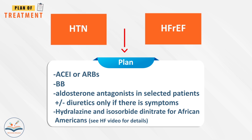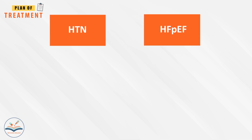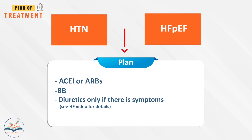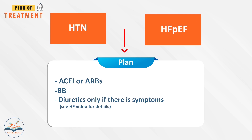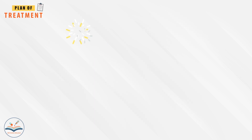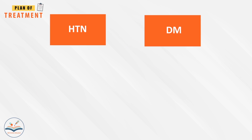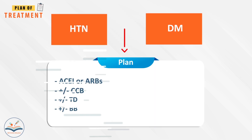In patients with hypertension plus heart failure with preserved ejection fraction, treat with ACE inhibitors or ARBs, plus beta blockers, plus diuretics only if symptomatic. See heart failure video for details. In patients with hypertension plus diabetes mellitus, treat with ACE inhibitors or ARBs, plus or minus calcium channel blockers, plus or minus thiazide diuretics, plus or minus beta blockers added on according to blood pressure goal.